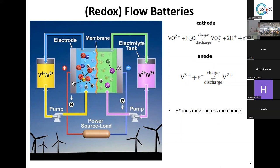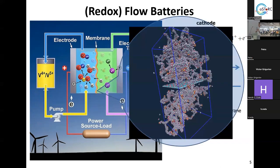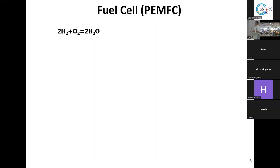The key element is the membrane, which separates the two electrolytes — otherwise they would mix. This is a very important element, and I will speak about this membrane. This is a snapshot from simulations showing the atomistic simulation of the membrane separating two electrolytes.